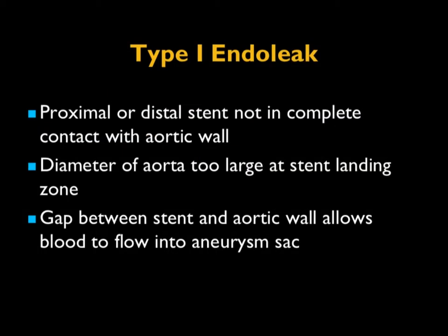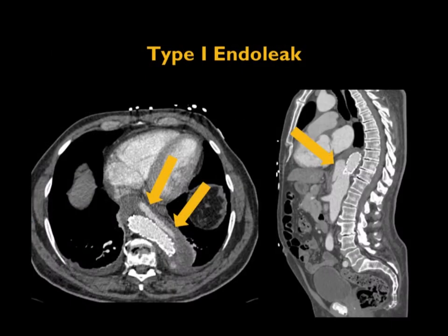There are five types of endoleaks. Type one involves the proximal or distal stent not in complete contact with the aortic wall. Typically the diameter of the aorta is too large at the stent landing zone, and the gap between the stent and the aortic wall allows blood to flow into the aneurysm sac. Type one endoleaks are seen but are less common now because of better manufacturing.